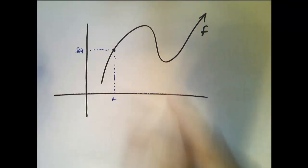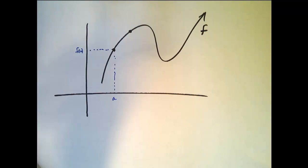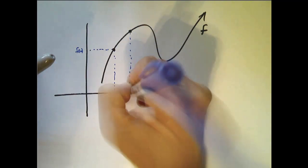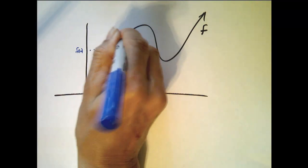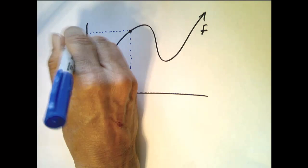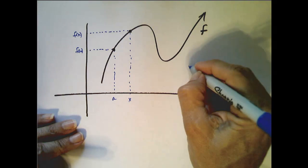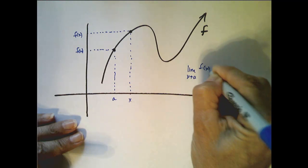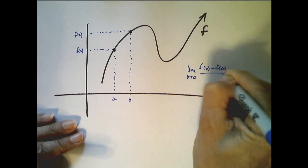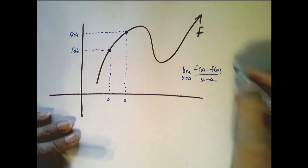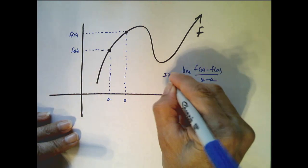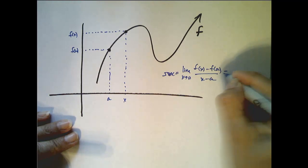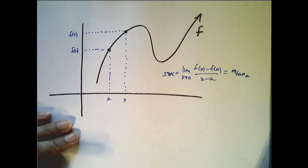And if this is an arbitrary point on the graph, which is going to be (x, f(x)), then as we defined just a second ago, the limit as x goes to a of [f(x) - f(a)] / (x - a) will represent the instantaneous rate of change of f on that interval, which is equal to the slope of the tangent line at a.